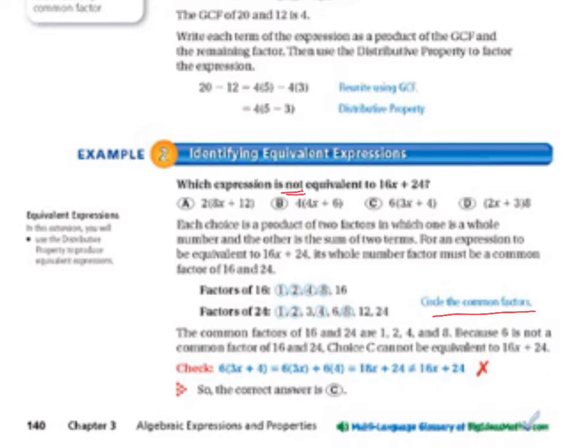Since 6 is not a common factor of 16 and 24, choice C is not going to be equivalent to 16x plus 24. So, since that's what we're looking for, which expression is not equivalent to 16x plus 24, then C is our choice. So, we're going to put a little dot in C.